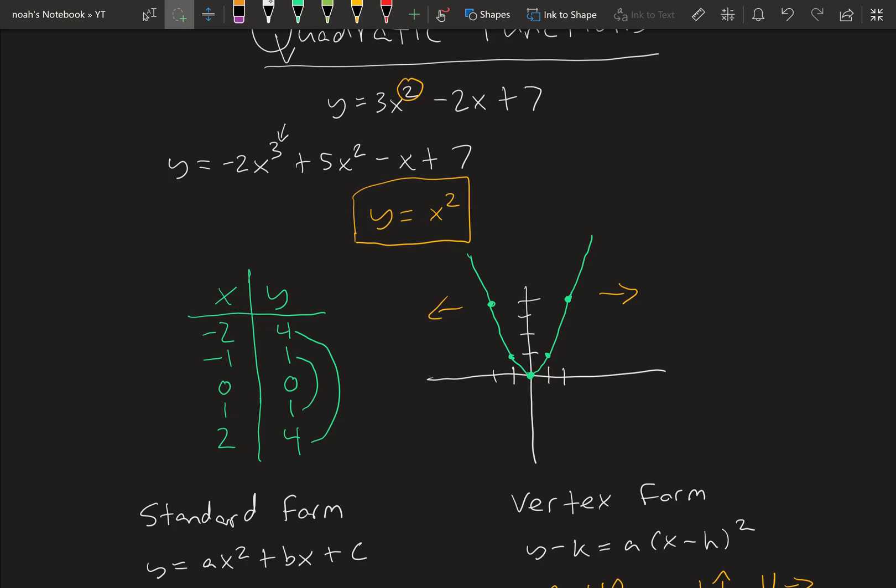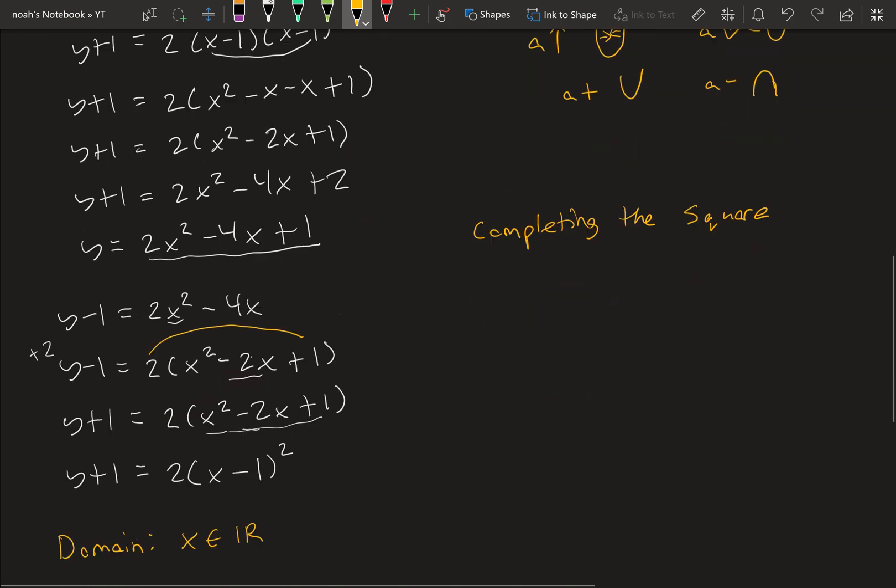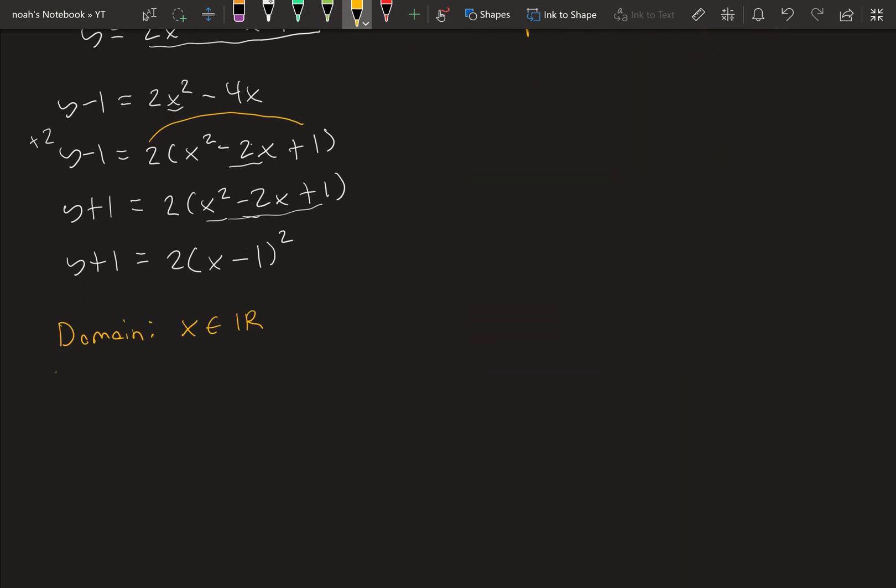The range, however, is only, in this case, greater than or equal to 0. It can't be negative. In our case right now, we don't know the range at the moment because we have to find the vertex first.